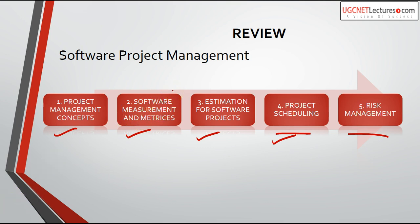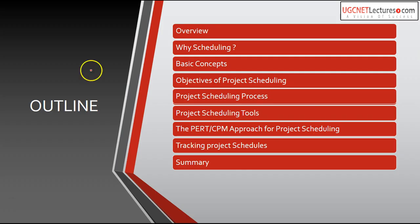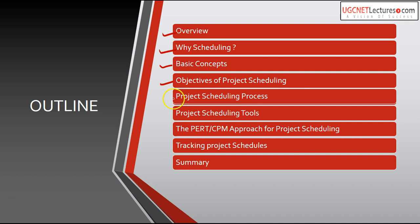Let's overview the lecture we are going to discuss today. We will cover Project Scheduling and all related concepts. The outline includes: first, an overview of scheduling — why we want to schedule a project and what the need of scheduling is. Then we'll see why Project Scheduling is important, what happens if we don't schedule a project. Then we'll cover the basic concepts of scheduling, what activities are involved, and the objectives of Project Scheduling. Then we'll discuss the Project Scheduling Process, where we divide the complete project into activities and plan them accordingly. Finally, we'll see Project Scheduling Tools like Gantt Charts and Activity Networks.